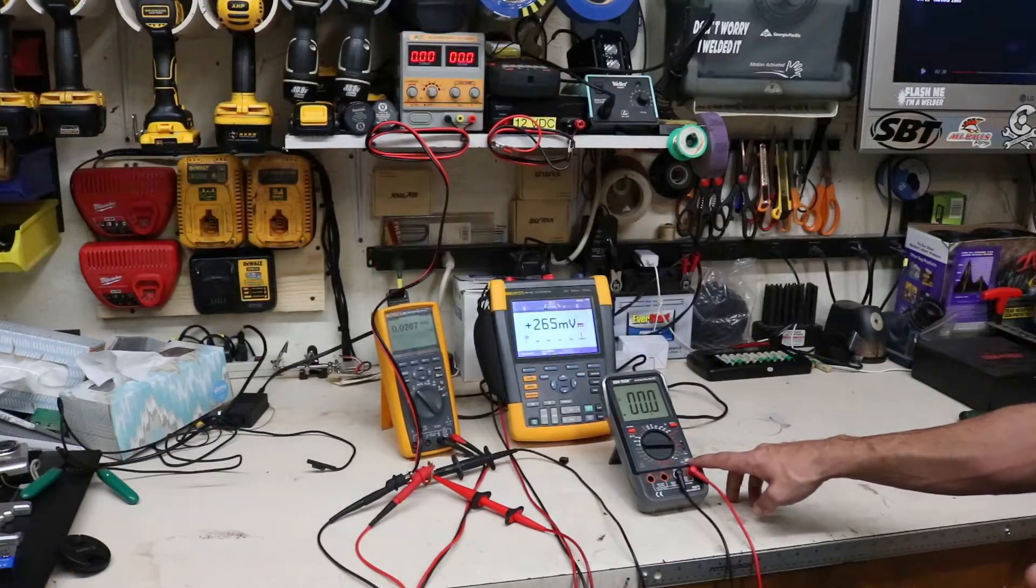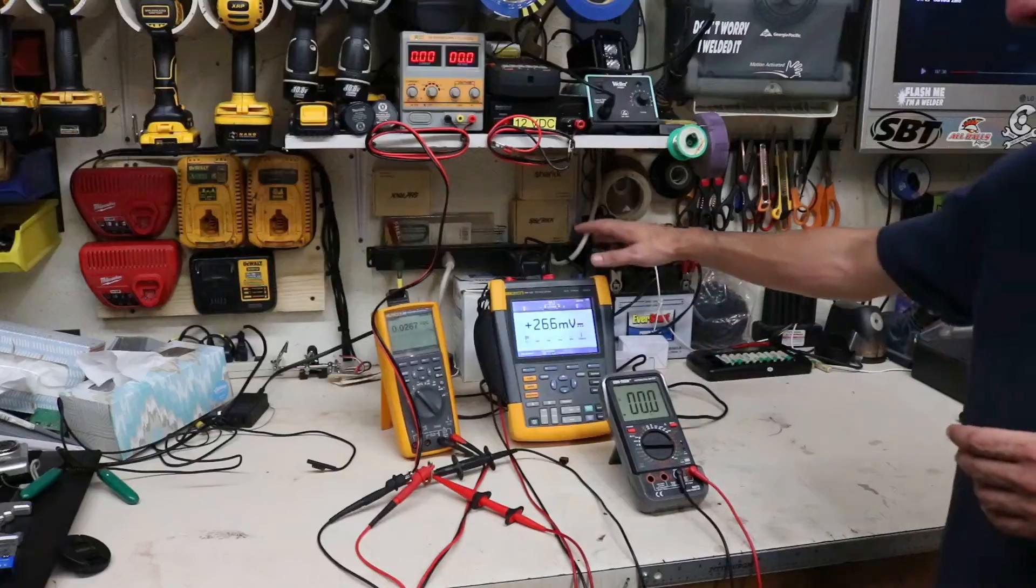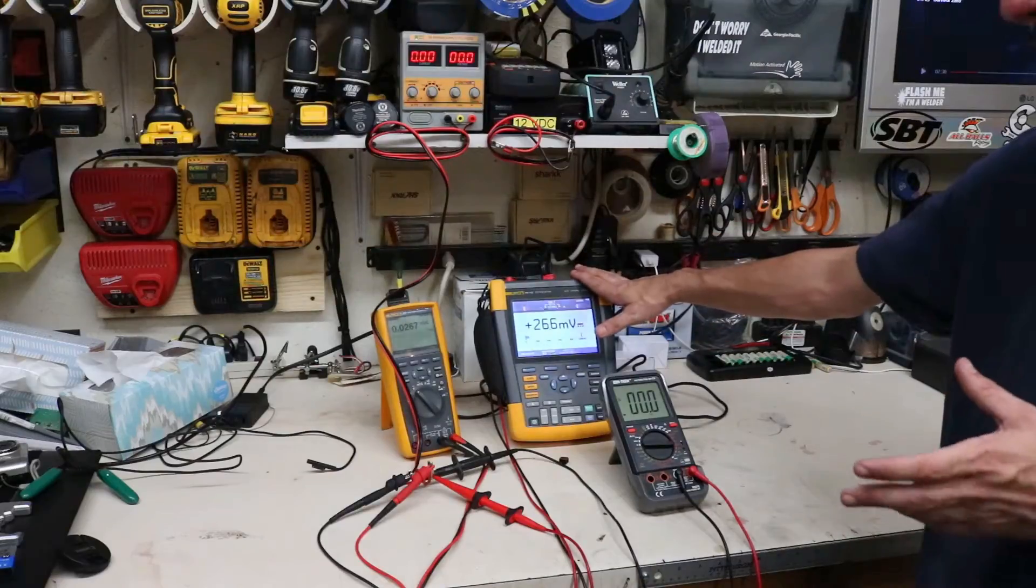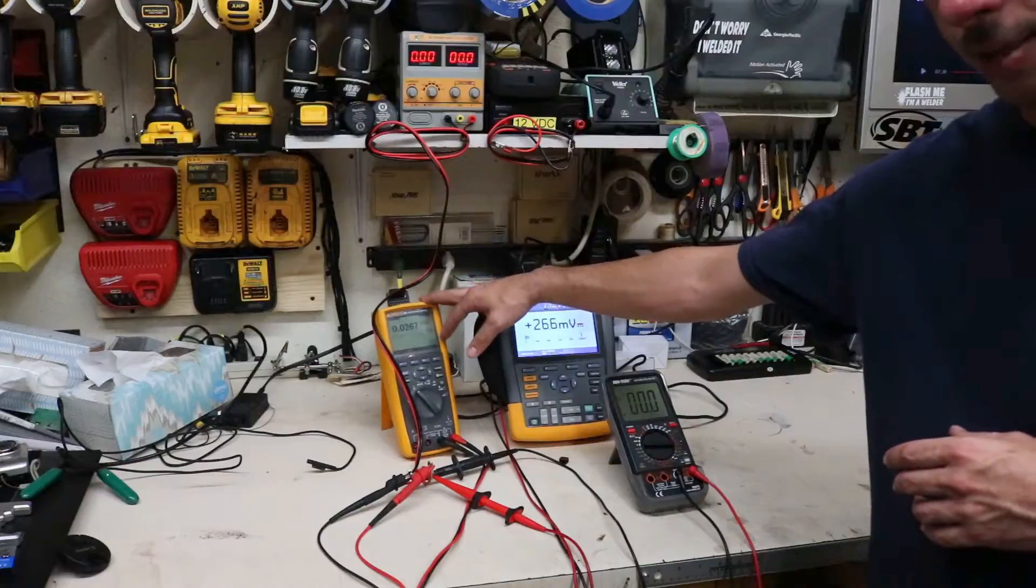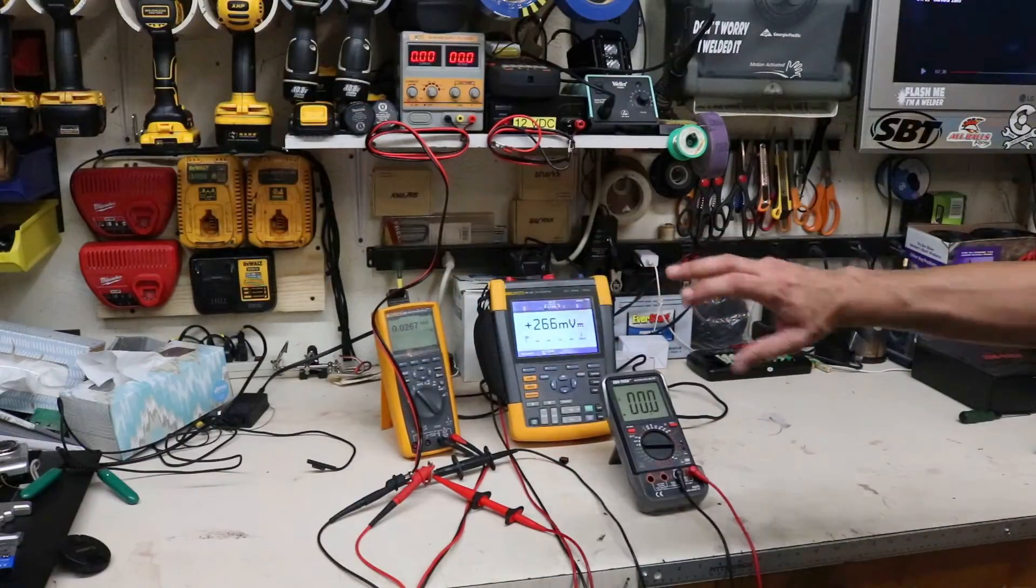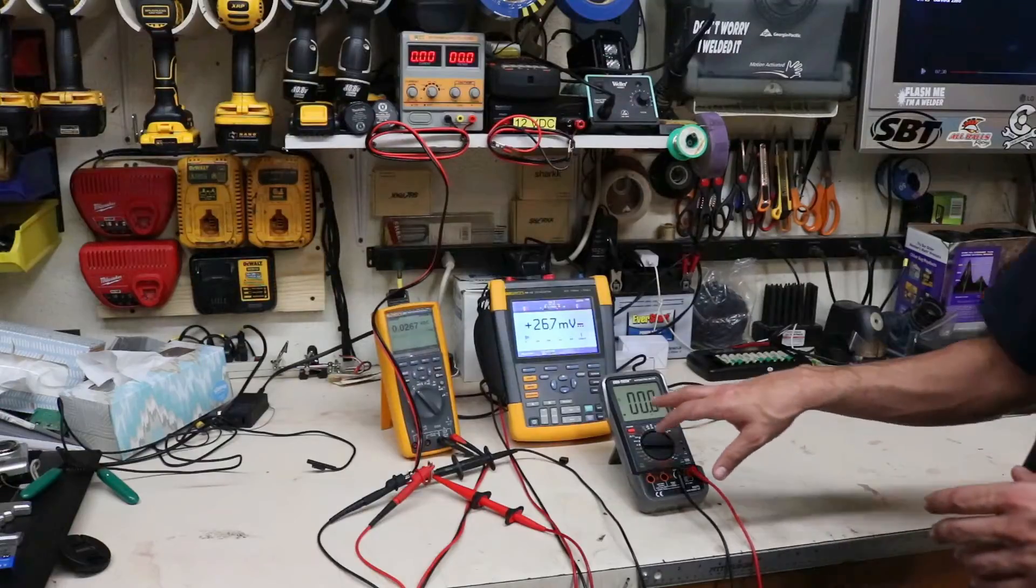When you get up into the $500-$600 plus range, you start to get into the professional meters. This Fluke oscilloscope here is about $4,500. This Fluke 287, I think I paid about $750 for it, and like I said, I send them out annually for calibration to Fluke.